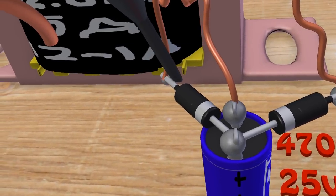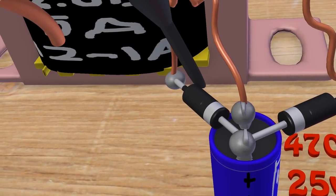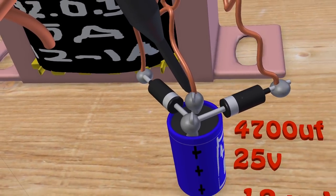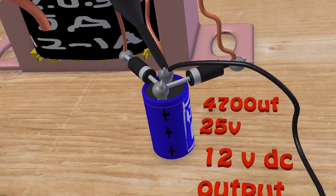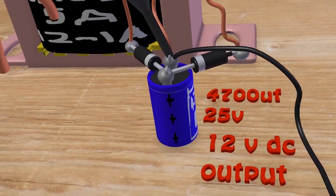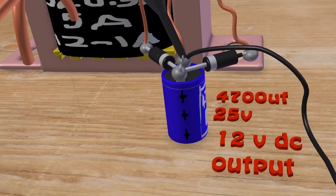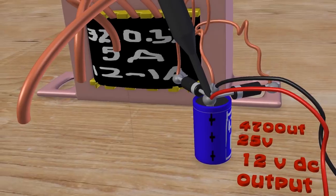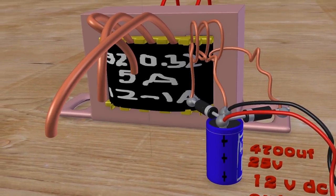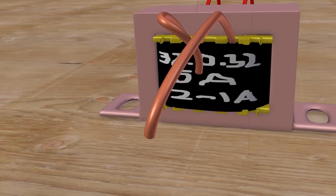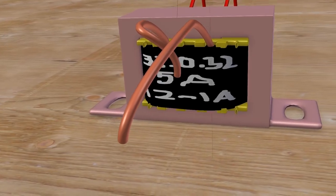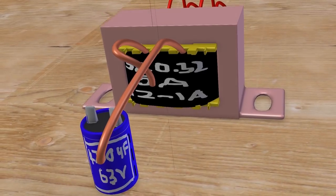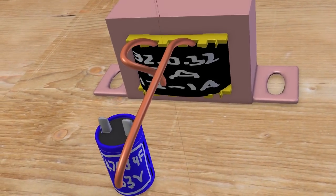If you have an AC voltage on the dial, you have a plus voltage output. If you have an AC voltage on the other side, you have a minus voltage output. From the transformer, you get a voltage output and a ground voltage.